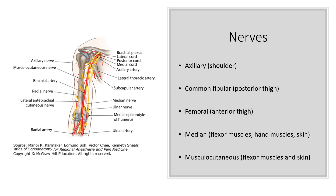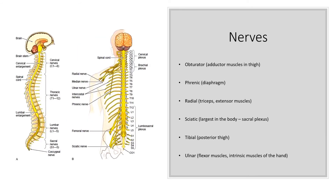The median nerve innervates your flexor muscles, hand muscles, and the skin. The musculocutaneous nerve innervates your flexor muscles and skin as well. The obturator nerve innervates the adductor muscles in the thigh. The phrenic nerve innervates the diaphragm. The radial nerve innervates your triceps and extensor muscles. The sciatic nerve innervates your sacrum. The tibial nerve innervates your posterior thigh, and the ulnar nerve innervates your flexor muscles and intrinsic muscles of your hand.